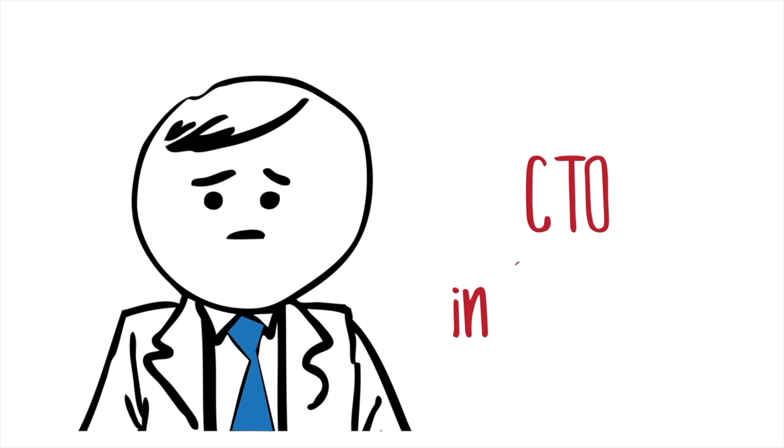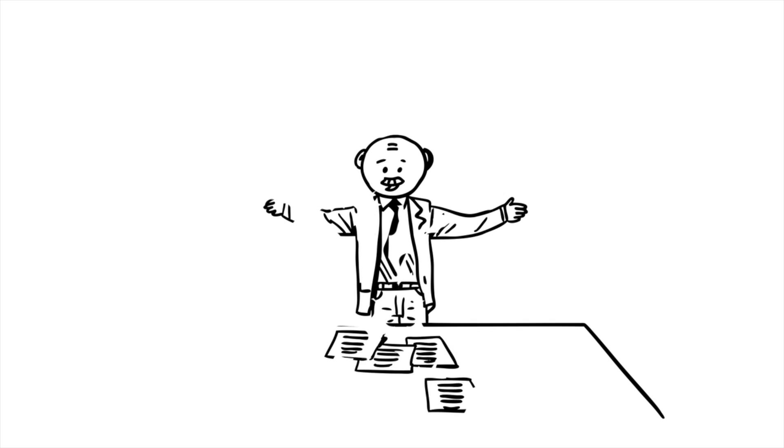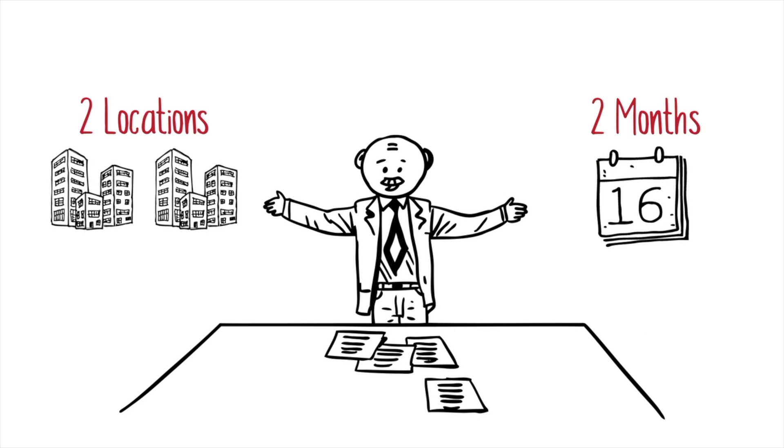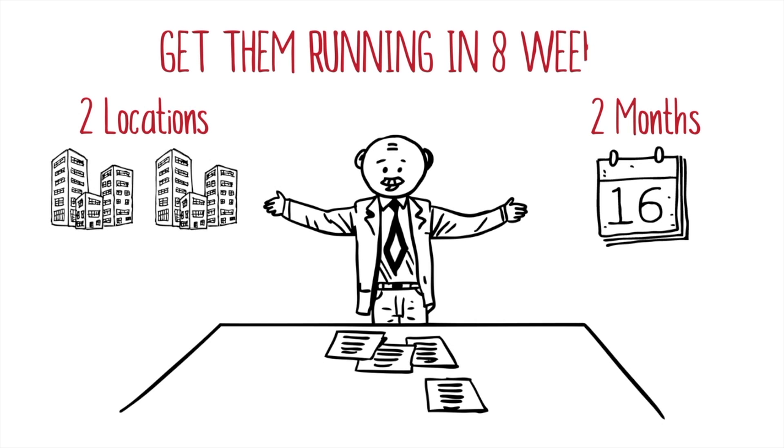Bob is a CTO in Chicago. The CEO tells Bob that they're opening two new office locations in two months. So Bob needs to get them running in eight weeks.